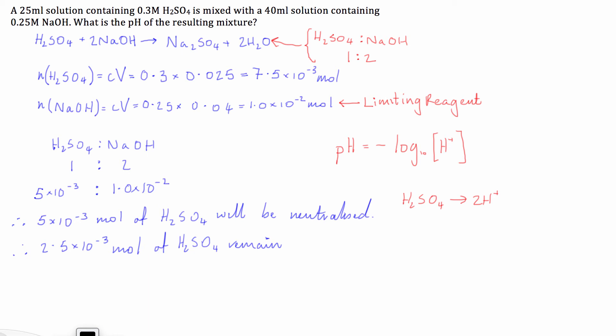So that will obviously mean if we have this many moles of H2SO4 remaining we're going to get double this or five times 10 to the negative 3 moles of H plus ions. So if we have that many moles of H plus we also to work out pH they need to be we need to have the concentration of H plus ions so what we do is we use the formula the concentration of H plus is equal to number of moles divided by volume.